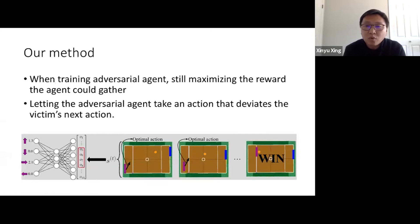So in this work, we propose a new approach to solve this problem. To be more specific, similar to the UC Berkeley approach, we also maximize the reward of our agent. But differently, we let our adversarial agent take an action that deviates the victim's next action.